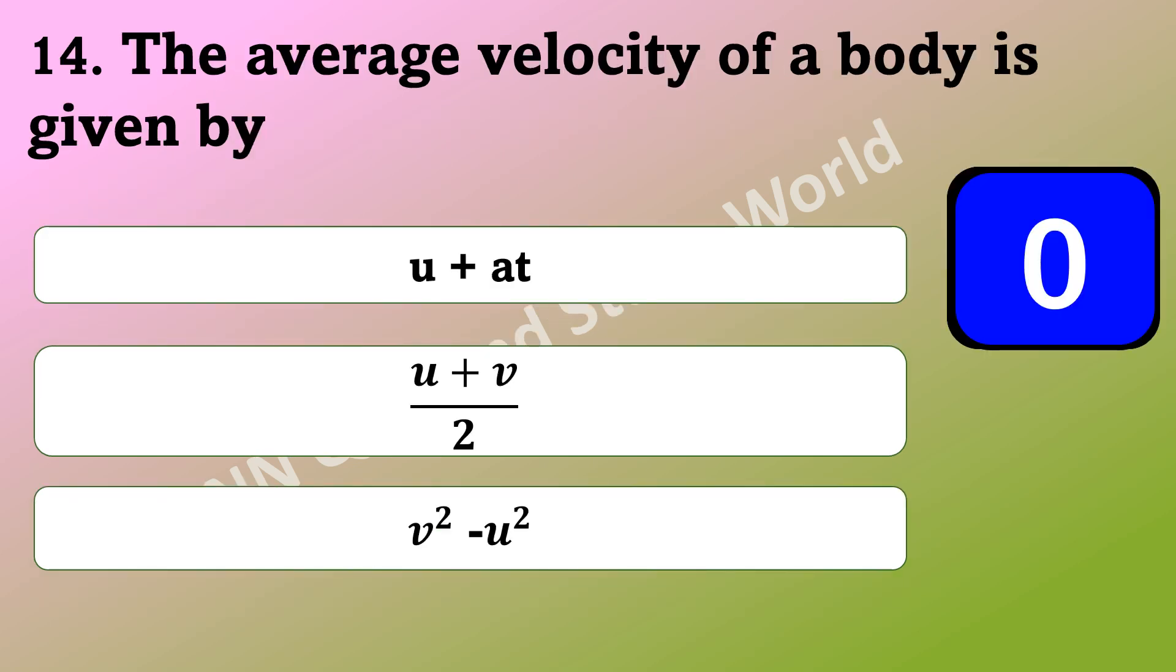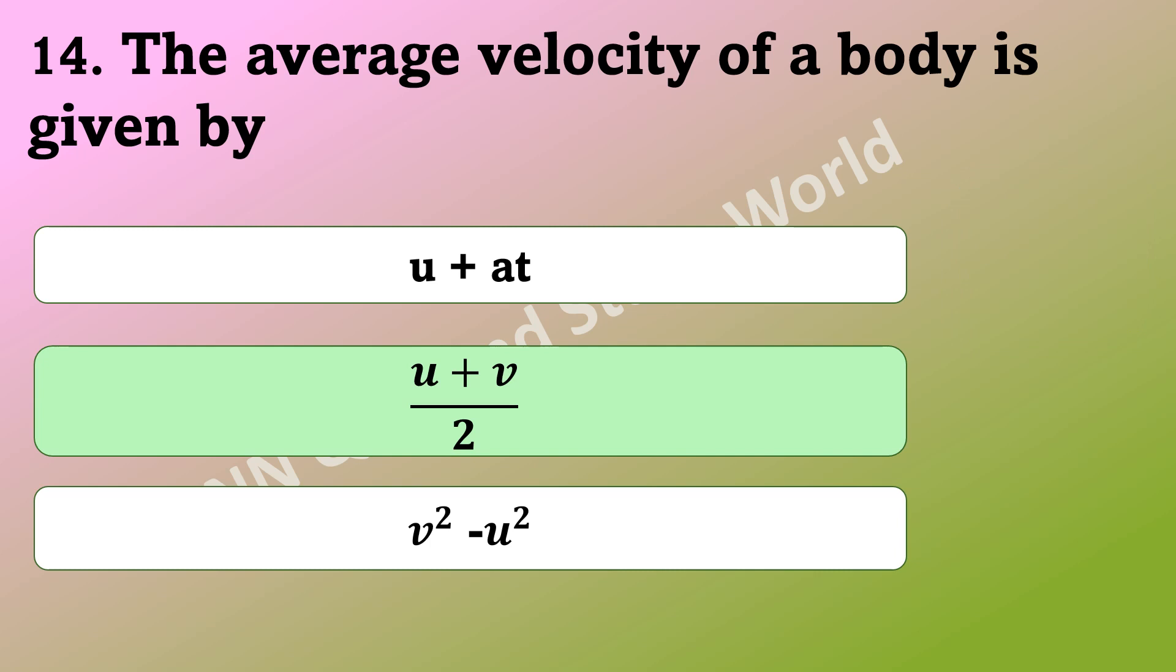How is the average velocity of a body represented? Is it u plus v, u plus v by 2, or v square minus u square? The answer is u plus v by 2.